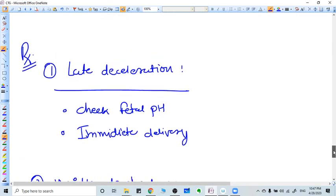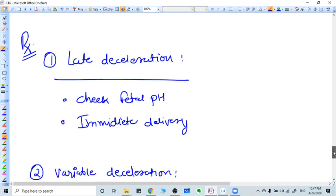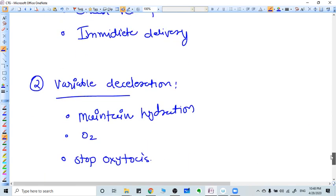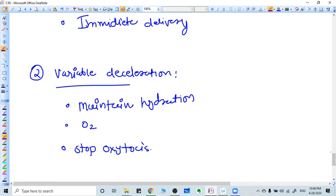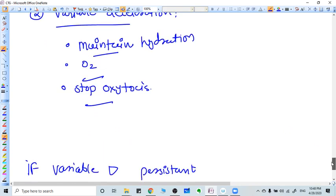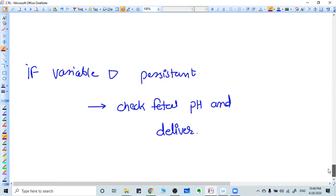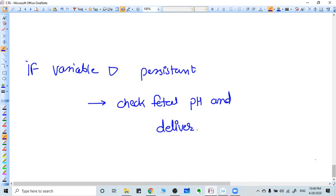Some very small amount of management has been given. If there is a late deceleration, that means there is utero placental insufficiency. And what we do next step is we do fetal acidemia and we need to do delivery immediately. If there is a variable deceleration, we need to check. We need to maintain hydration first, oxygen, oxytocin which we should stop. We should do recheck. We should monitor. If variable deceleration persists, then we have to deliver the baby.